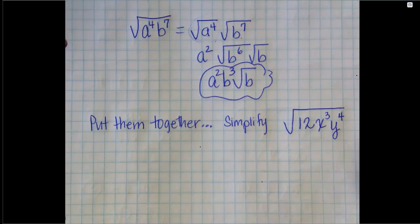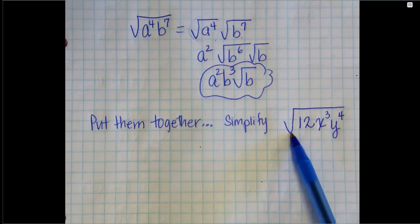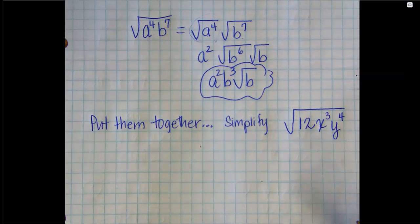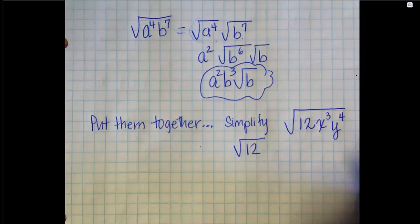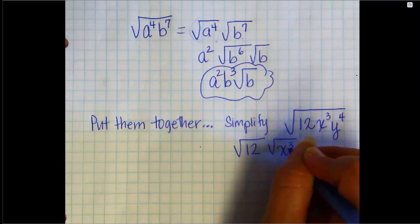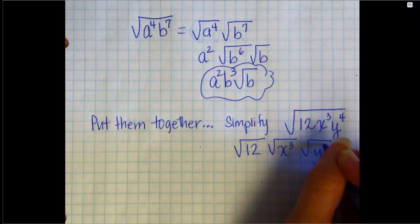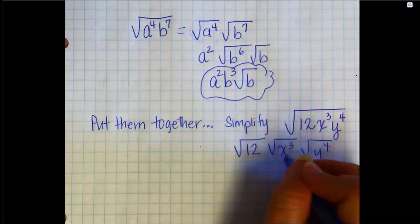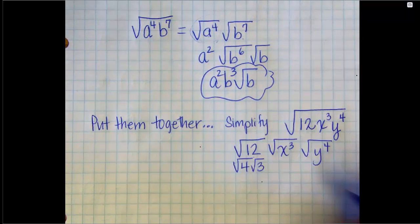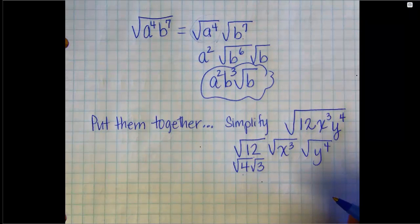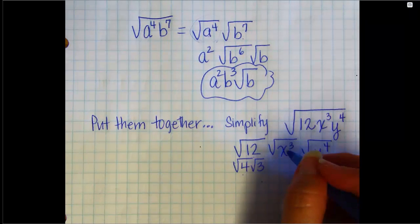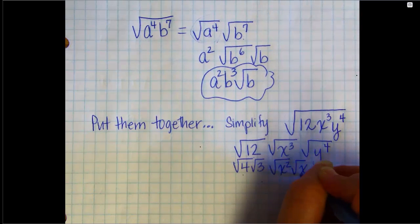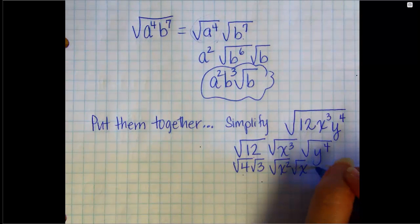So often in this course, you'll be asked to simplify something like the square root of 12 X cubed Y to the fourth. Again, until you get really good at these, you can break them up into pieces. So here's the square root of 12, times the square root of X cubed, times the square root of Y to the fourth. The largest perfect square number that divides into 12 is 4. So 12 is 4 times 3, with the perfect square number. It is 6 and 2, but neither of those are perfect. The square root of X cubed is X squared times X. The square root of Y to the fourth, that's perfect, that's just Y squared.